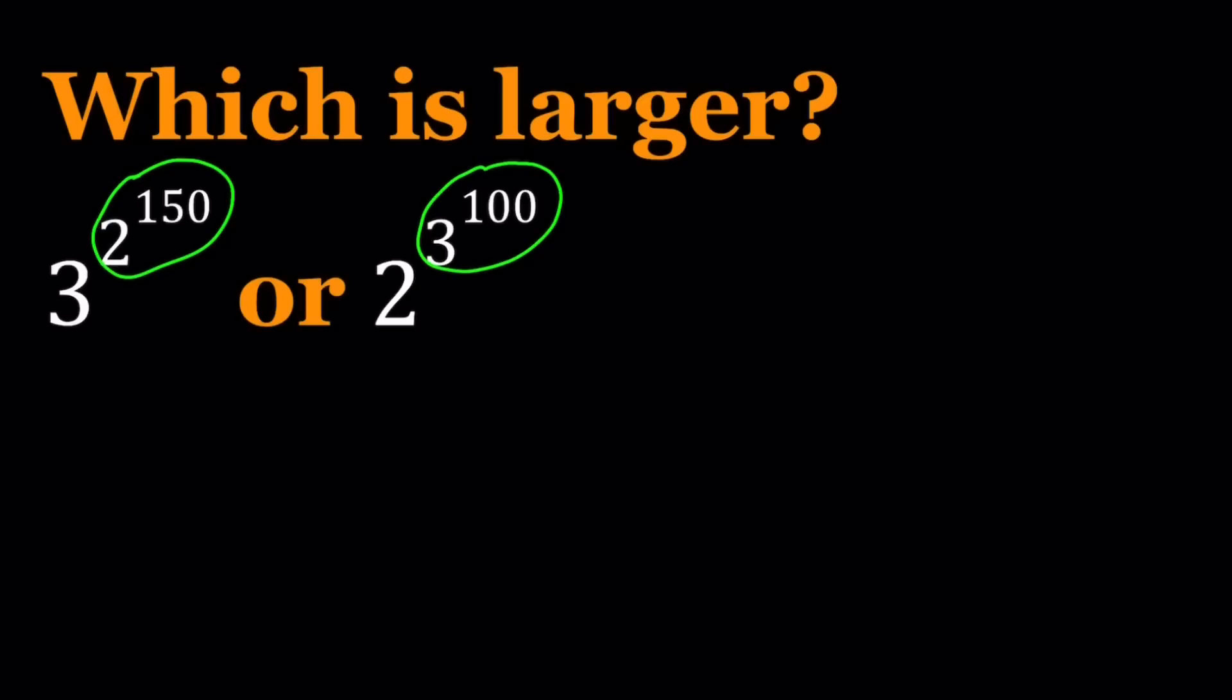Anyways, how do you compare 2 to the power 150 and 3 to the power 100? That should be fairly easy because 150 and 100 have a common factor. 2 to the power 150, and if you said 50, you're right. 2 to the power 150 can be written as 2 to the power 3 to the power 50 because 3 times 50 equals 150.